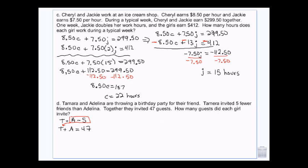So, I put that there. And I have A minus five plus A equals 47. So, 2A minus five equals 47. 2A is equal to 52. So, I add five to both sides. A is equal to 26. So, she invited 26 friends. And then Tamara invited 26 minus five. So, 21 friends.